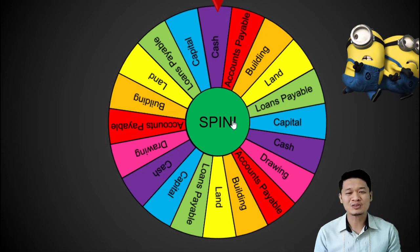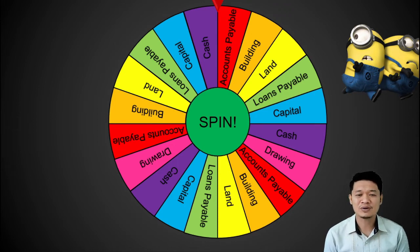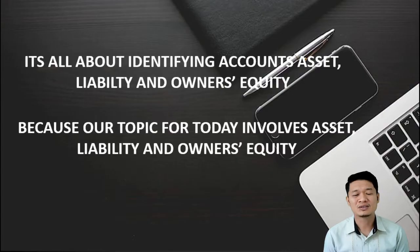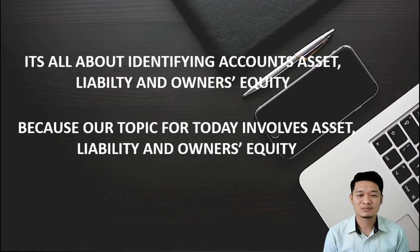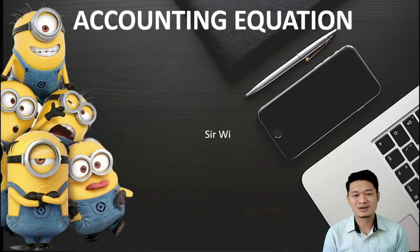Congratulations! You got all the correct answers. Did you enjoy our game? Great! What do you observe about our game Spin a Wheel? Yes, very good! It is all about identifying accounts like asset, liability, and owner's equity. Because our topic for today involves asset, liability, and owner's equity, and it is all about the accounting equation.